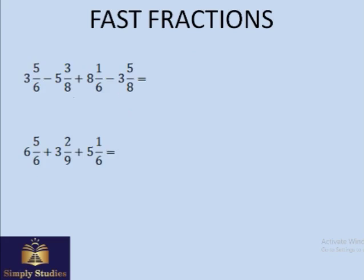Here, two fractions are subtracted and two are added. Let's add first: 5/6 and 1/6 give you 1, and 8 plus 3 is 11, plus 1 is 12. So we have 12 minus something. 5 plus 3 is 8 and that fractional part adds to 1, making 9. So 12 minus 9 gives you 3.